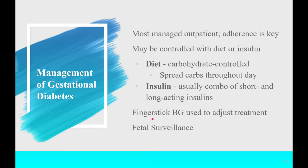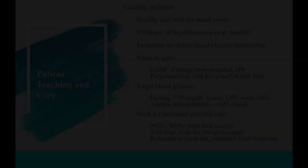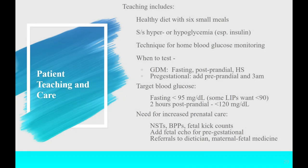Fetal surveillance is an important part of managing diabetic pregnancy. This mom will need kick counts, non-stress tests, and biophysical profiles. Ultrasounds are needed for growth monitoring — to see if the baby is getting too big or not growing at all — and for amniotic fluid index to make sure we're not developing polyhydramnios. All of those are important management tools.